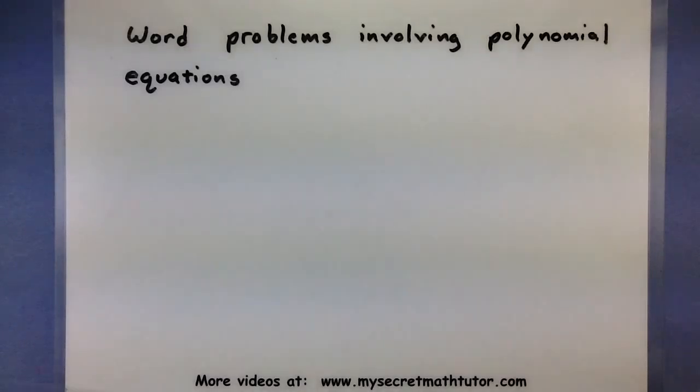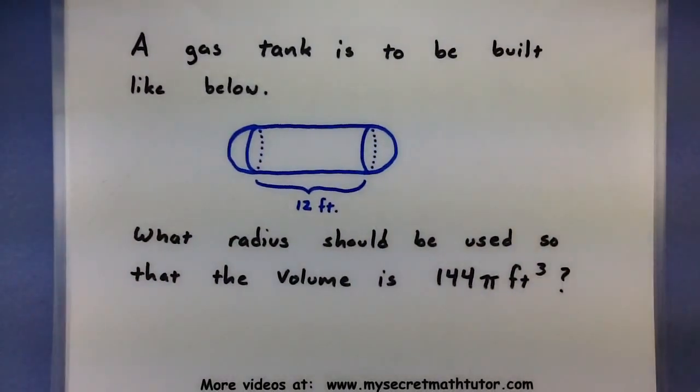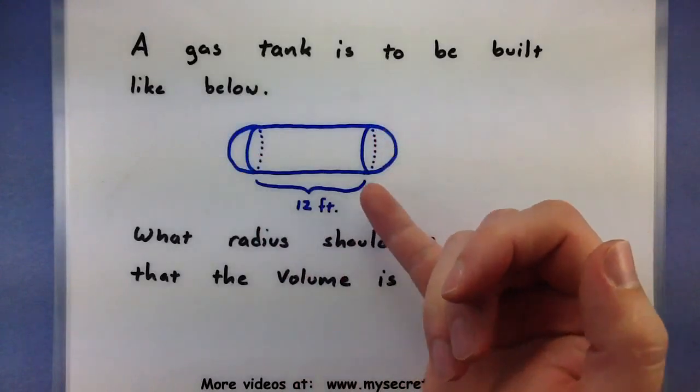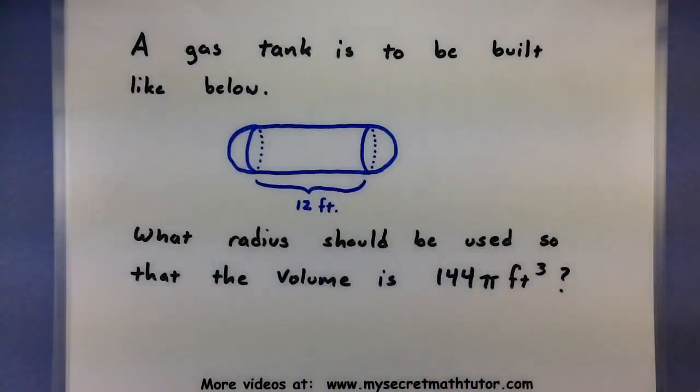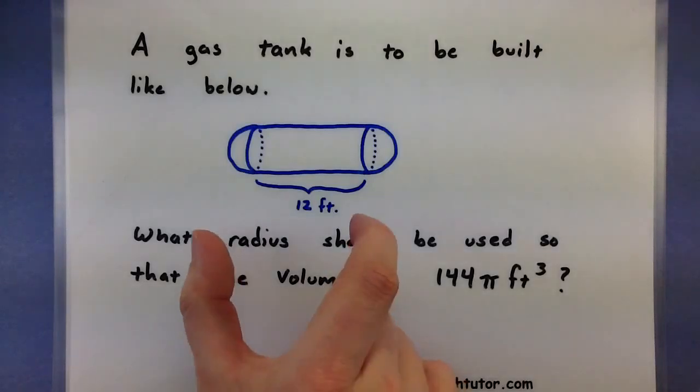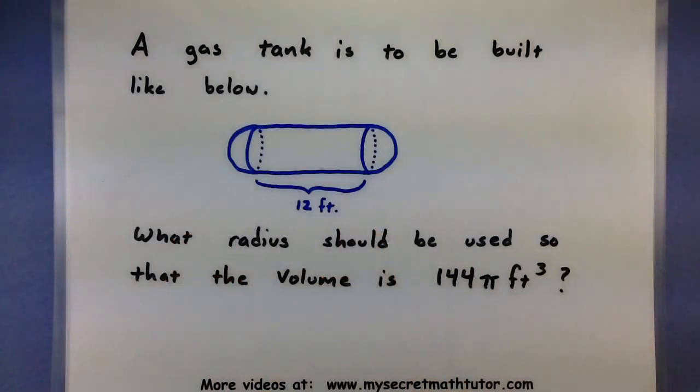The word problem that I have cooked up for this video is as follows. A gas tank is to be built like the one below. You often see many propane tanks that have a similar shape. They have two half spheres on each end and a big cylinder piece in the middle. The only thing we know about this tank so far is that the cylinder piece is exactly 12 feet long. The question is, what radius should I make these little spherical pieces on the end so that the volume of the entire tank will be exactly 144 pi cubic feet?